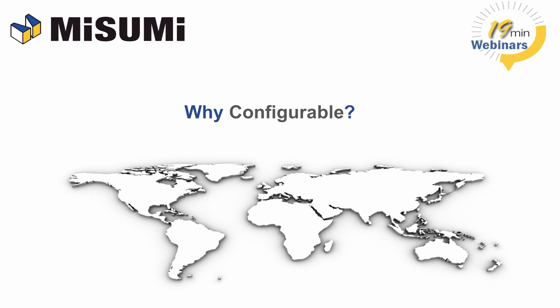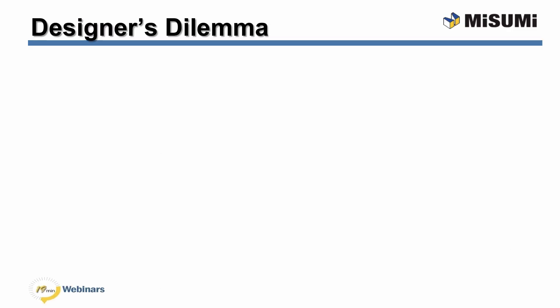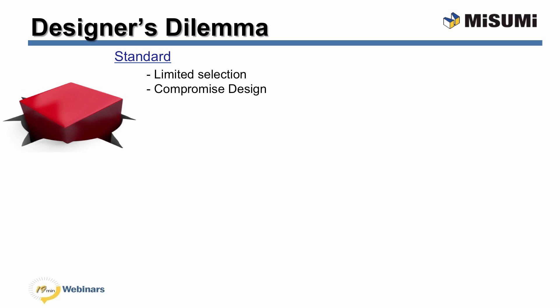Configurable components solve the designer's dilemma. A designer has two choices for components: standard or custom. Standard components have limited selection and often force designers to compromise their designs. These have many pluses such as CAD, static part numbers, fast delivery, and often seem inexpensive and convenient.